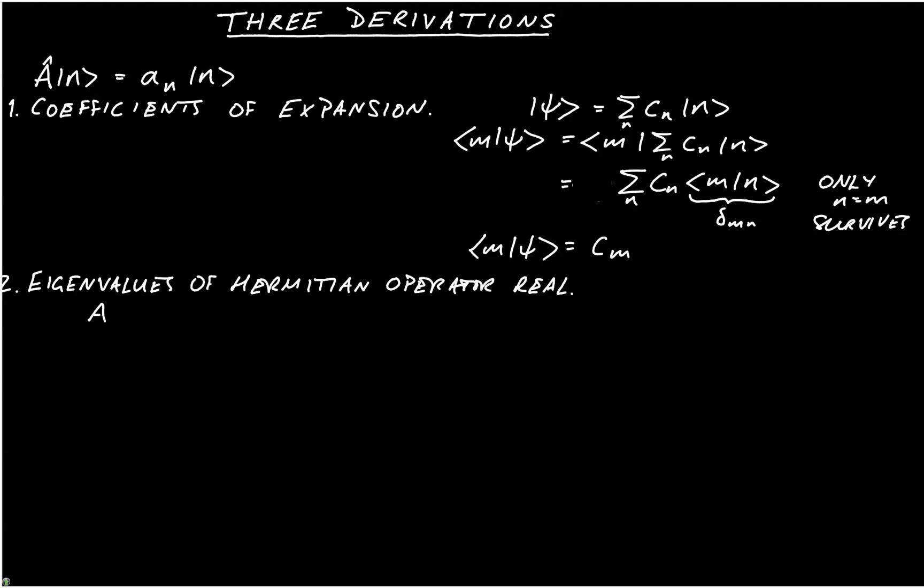We start from A acting on |n⟩ being equal to a_n |n⟩. We will then contract that with ⟨n|. So we have ⟨n|Â|n⟩ is equal to a_n ⟨n|n⟩, which is of course just equal to a_n. We now have two numbers: ⟨n|Â|n⟩, and the number a_n. I'm going to take the complex conjugate of both of these numbers.